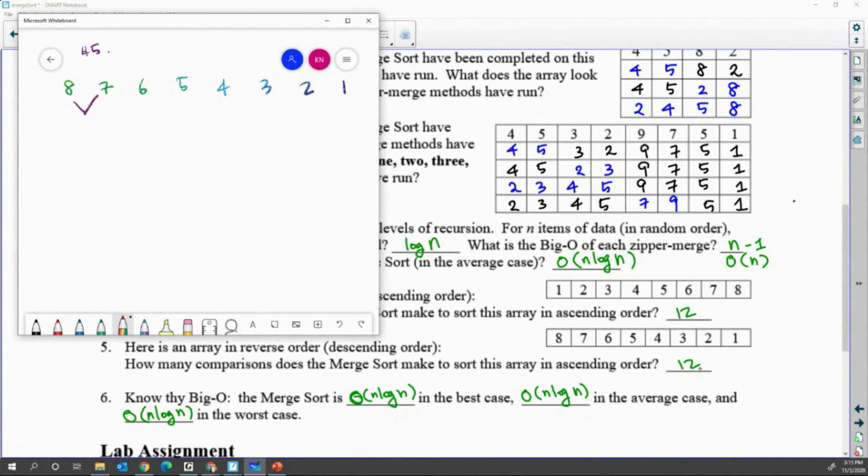If I assume it's already all split into just one item, then first merge, I need to compare 7 and 8. So one comparison happened. Then when I do second merge, 6 and 5, second comparison happens. So compare 8 and 7, then compare 6 and 5. Now I have 2 pointers.